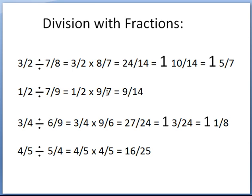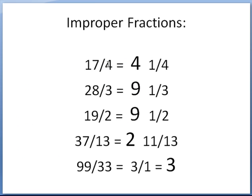Now, improper fractions: the numerator is larger than the denominator. Seventeen-fourths: how many times does 4 go into 17? Four times, since four times four is 16. Seventeen minus 16 leaves one, so it's four and one-fourth. Check: four times four is 16, plus one is 17 — seventeen-fourths. Twenty-eight-thirds: three goes into 28 nine times, since three times nine is 27. Twenty-eight minus 27 leaves one — nine and one-third. Check: three times nine is 27, plus one is 28.